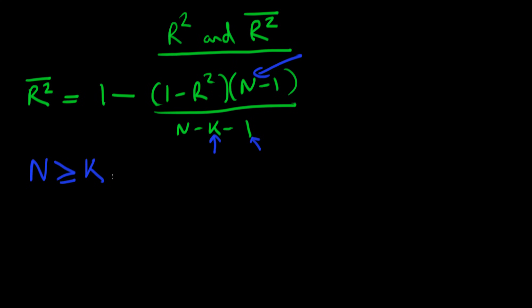Let's think about what happens if K increases. If I increase K, and remember that K is less than N, then N minus K minus 1, the denominator here, is going to fall. I'm taking away a bigger number from N, so this number is getting closer to zero.